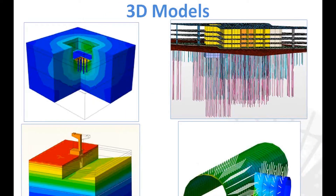All other cases that don't fall under plane strain and axisymmetric models must be modeled in 3D. Examples include pad footings, mat foundations, piled raft foundations, laterally loaded pile groups, inclined piles, tunnel intersections, and anything with a very complicated 3D geometry or out-of-plane loading. Keeping all of that in mind, let's look at our four-story hotel project.